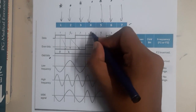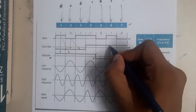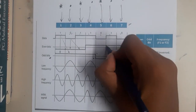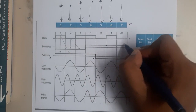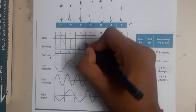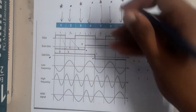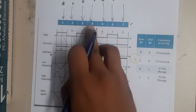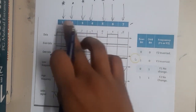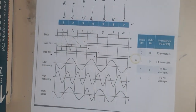At position four the value is one, so we go high and continue till six. At six it is also one, so we continue high. In this way, based on even-positioned bits and odd-positioned bits, you draw the signal.